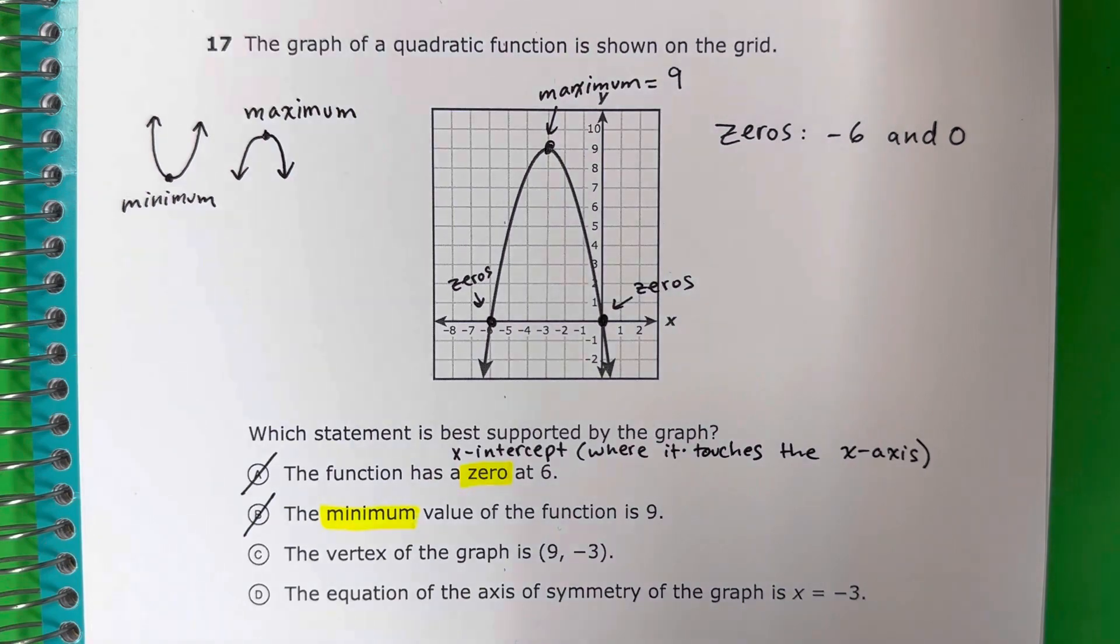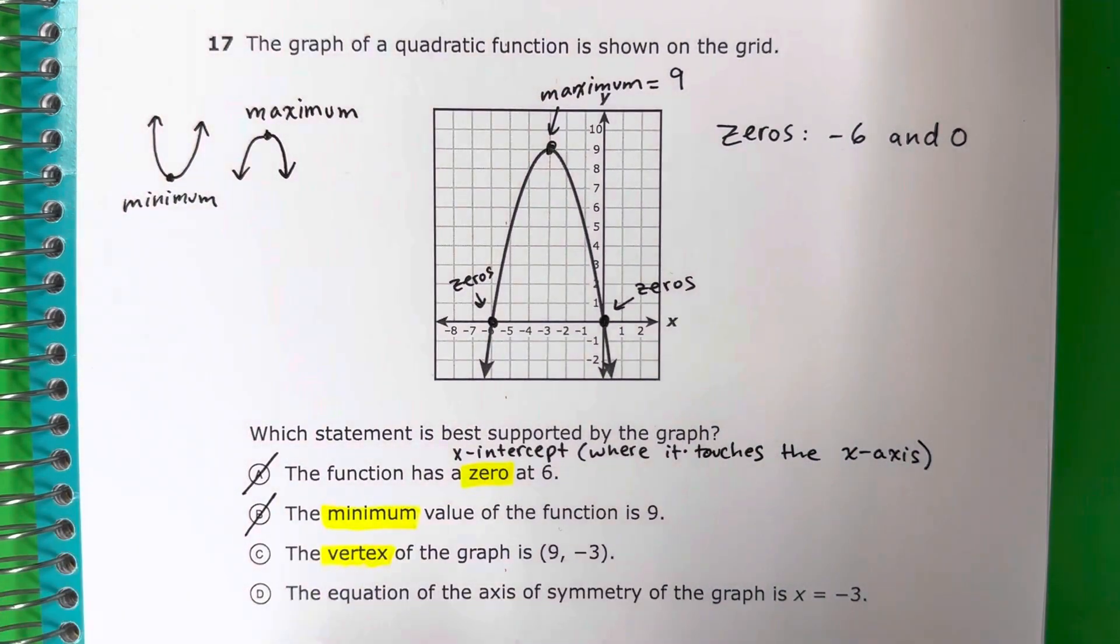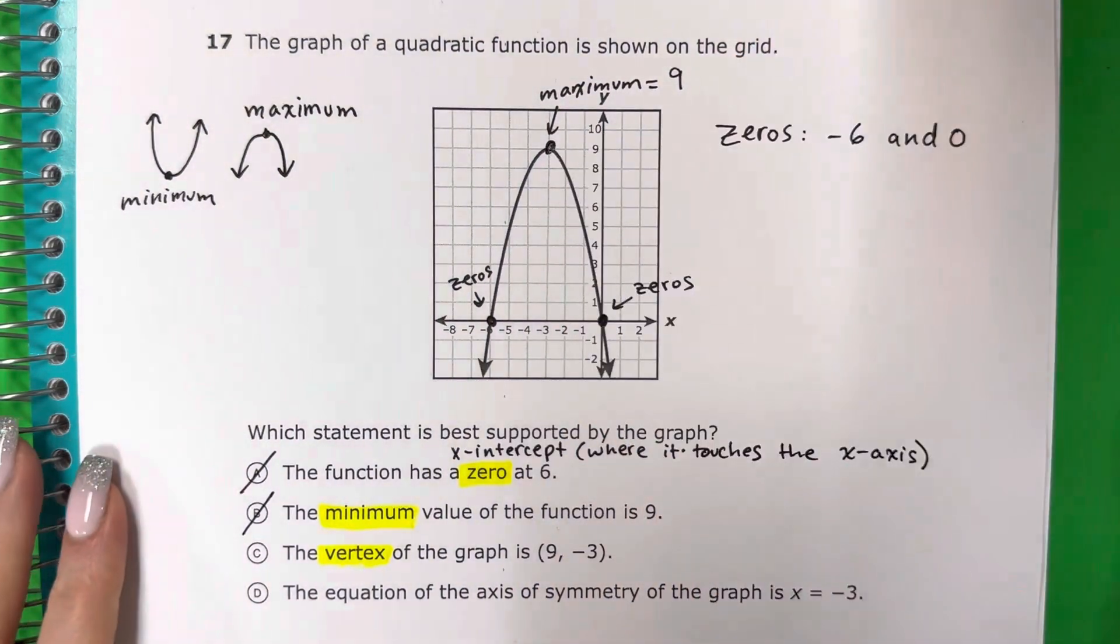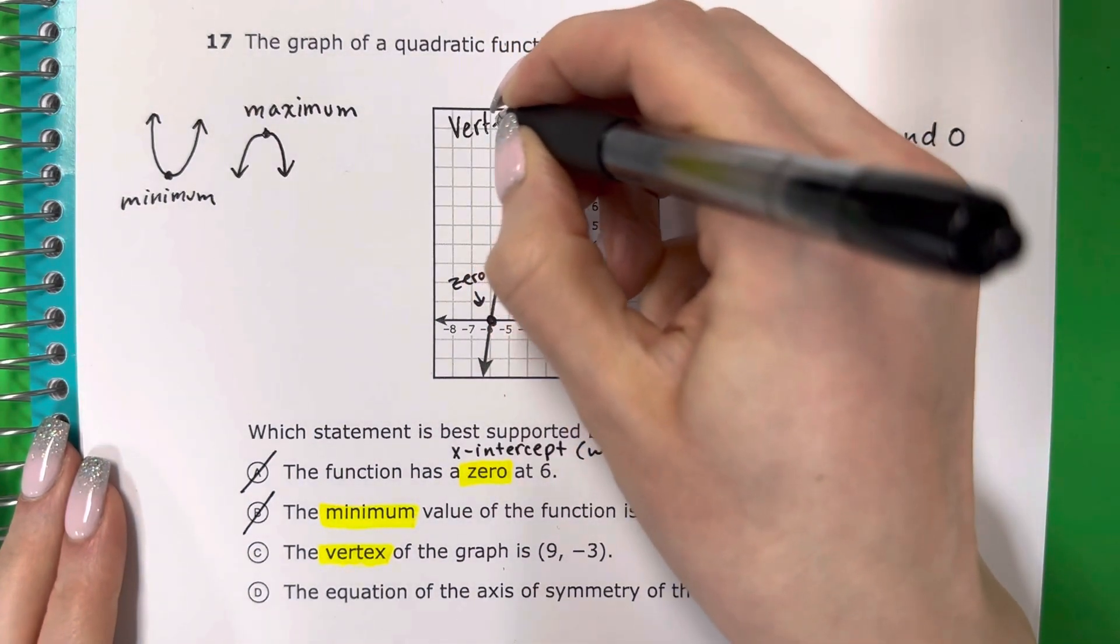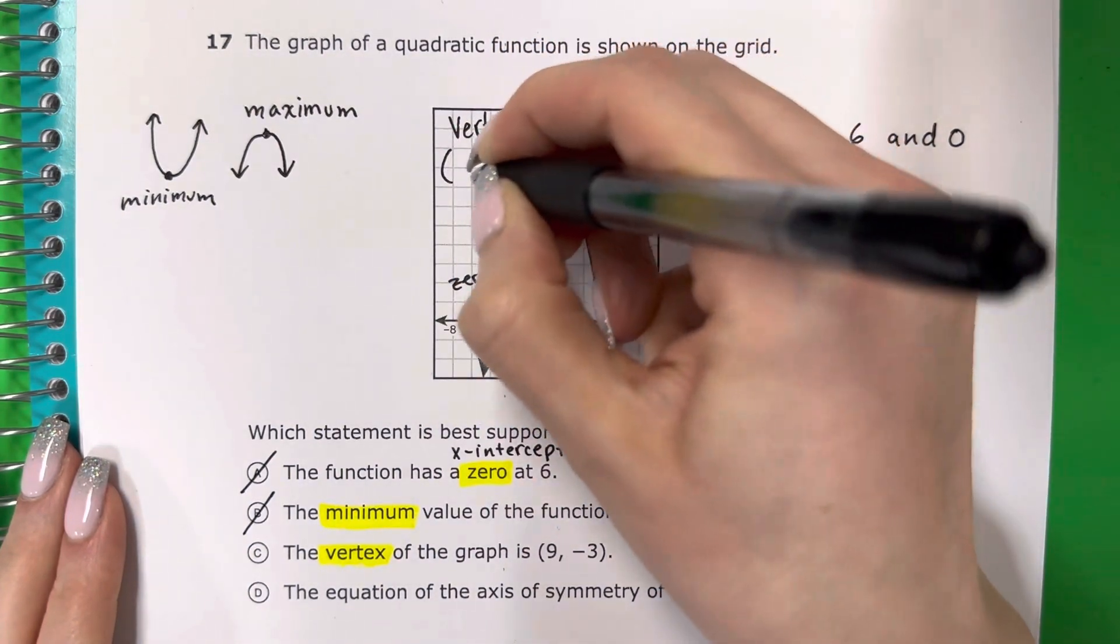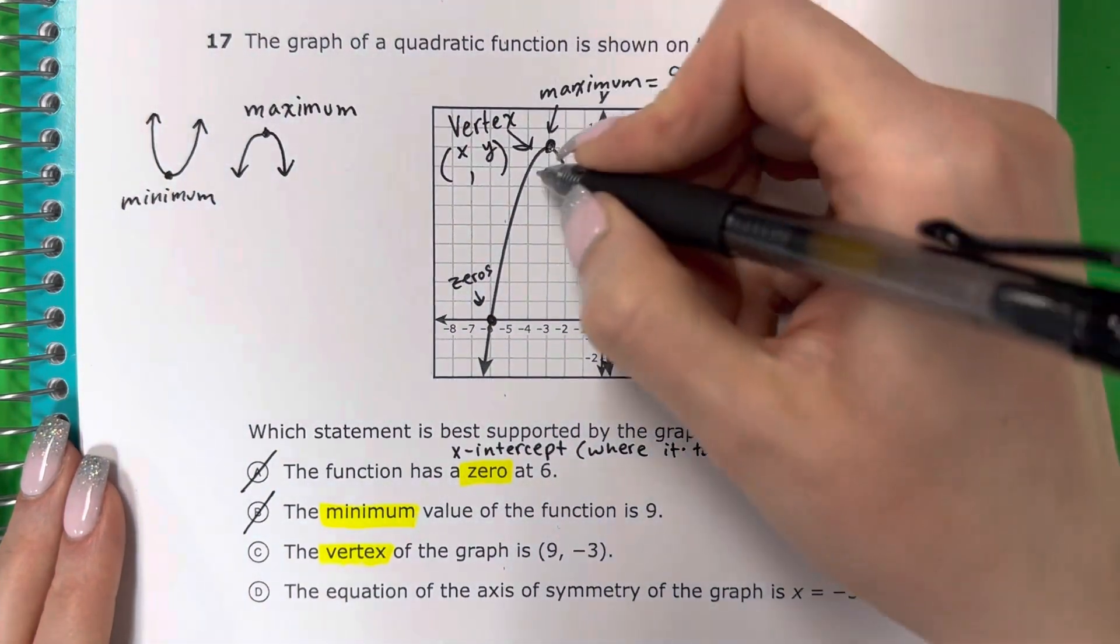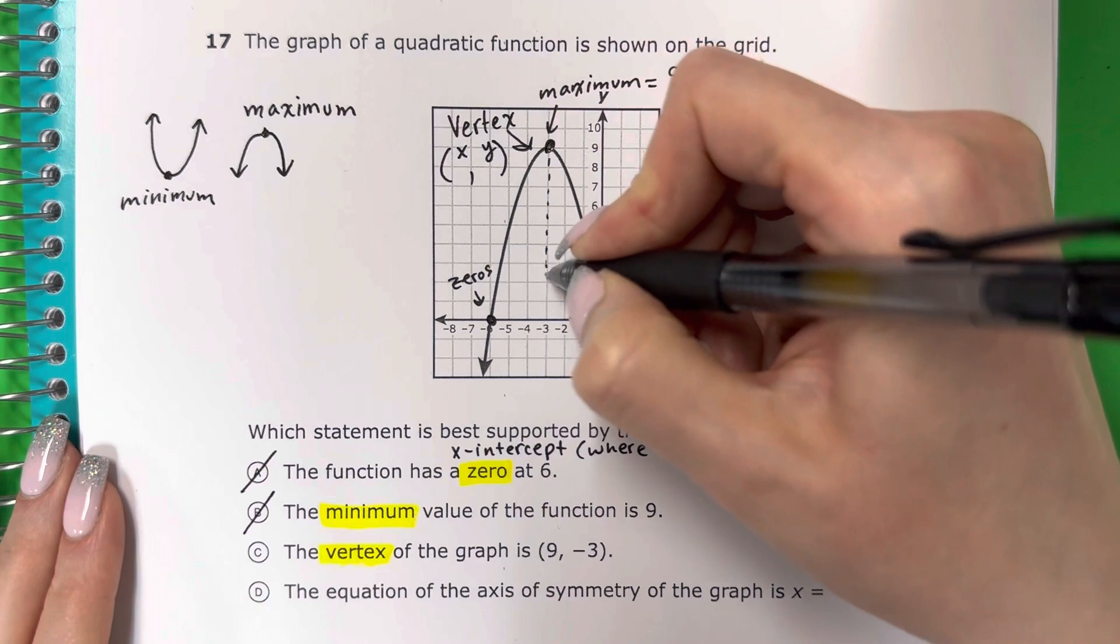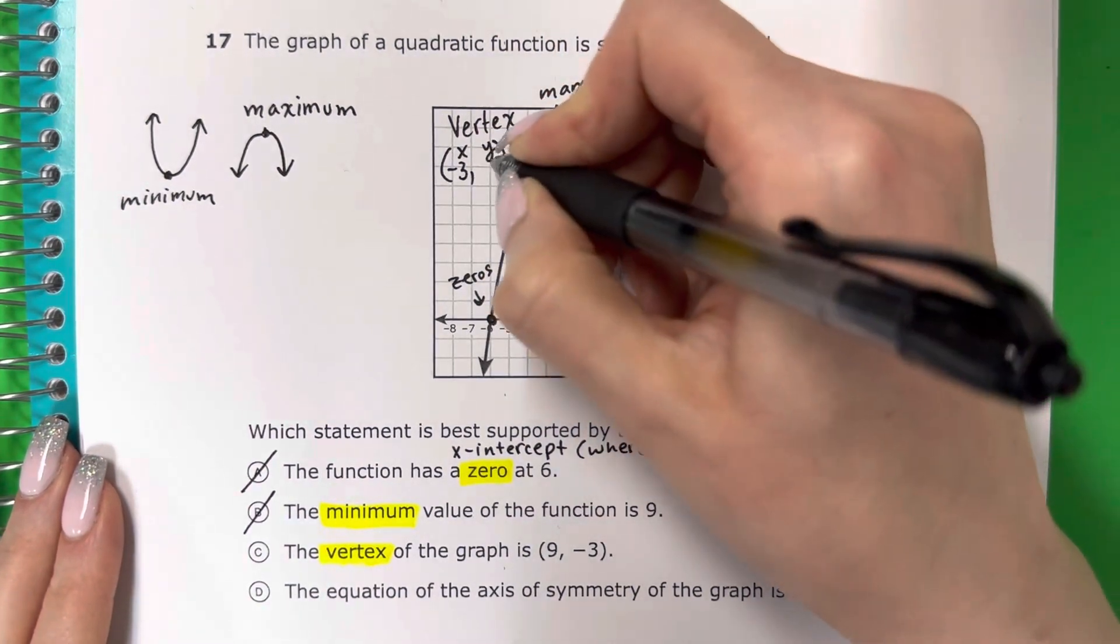The next one is C. It says the vertex of the graph is 9, negative 3. Let's see what is the vertex. The vertex is that center point right there. That's the vertex. Let's see what the ordered pair of that vertex is. Remember X first then Y. Looks like X is negative 3 and Y is 9.